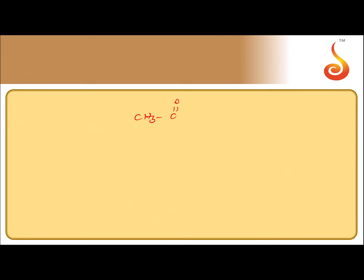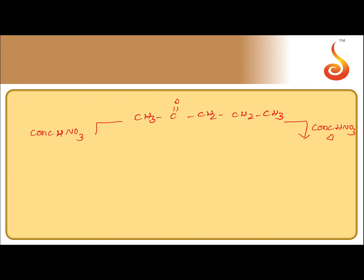Let us take an example: CH3-CO-CH2CH2CH2CH3, which is pentan-2-one. If pentan-2-one is oxidized using concentrated HNO3, the C=O group can go with the propyl group or the methyl group — meaning bond A or bond B can be cleaved.